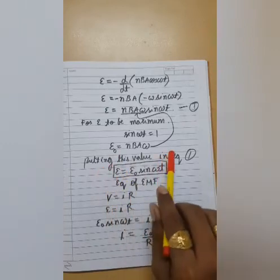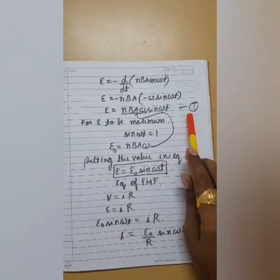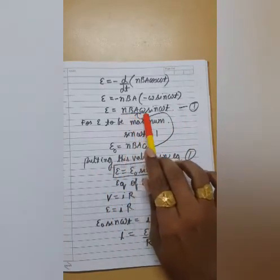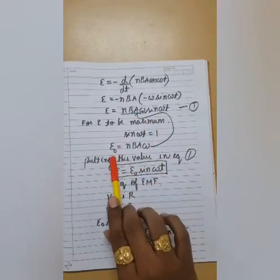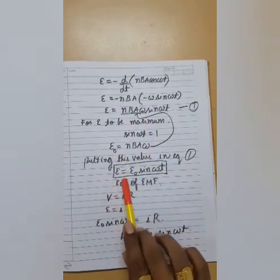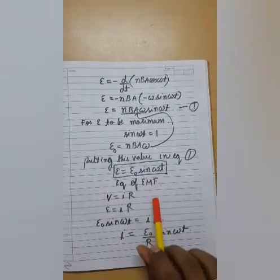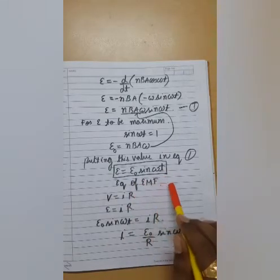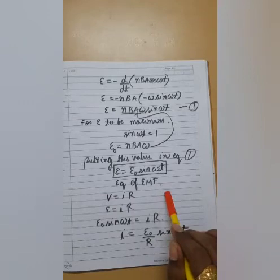Now, we can put this value back into our equation number 1. So in place of nBA omega I can write e knot. So finally, I am left with e is equal to e knot sin omega t. Now this is also considered as equation of EMF.